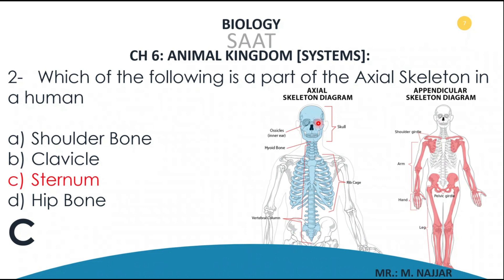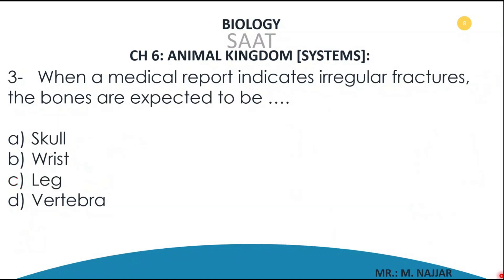Question number three: when a medical report indicates irregular fractures, the bones are expected to be A) skull, B) wrist, C) leg, D) vertebra. The answer is D — vertebra.